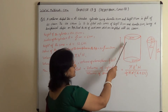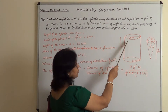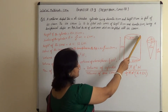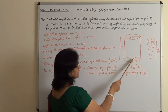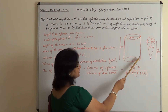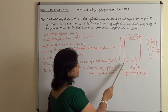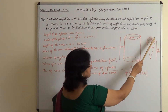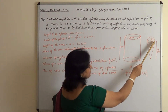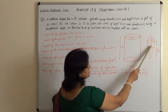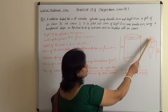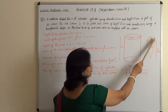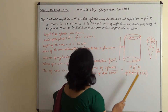Here is the diagram of the cylinder. It has a diameter of 12 cm, so the radius is 6 cm, and the height is 15 cm. This is the cone with a hemispherical end. The radius of the cone is 3 cm, so the radius of the hemisphere on top will also be 3 cm.